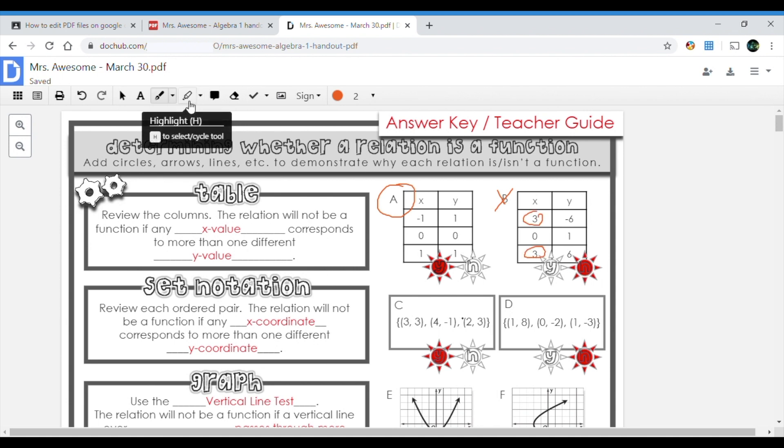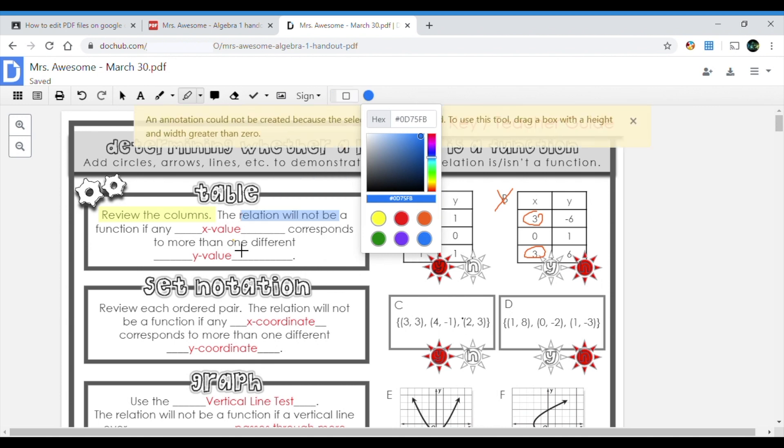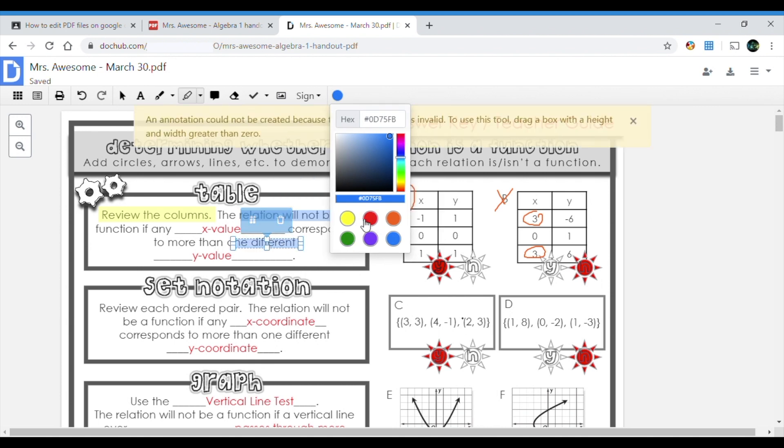Now I'm gonna go ahead and show you the highlighting tool, which is amazing. So if I click on the highlighting tool, I can highlight the important things that my teacher wants me to do. Review the columns. The relation will not be a function. I'm just gonna highlight the relation will not be. Now I can change the color right here. I'm gonna go ahead and use blue.